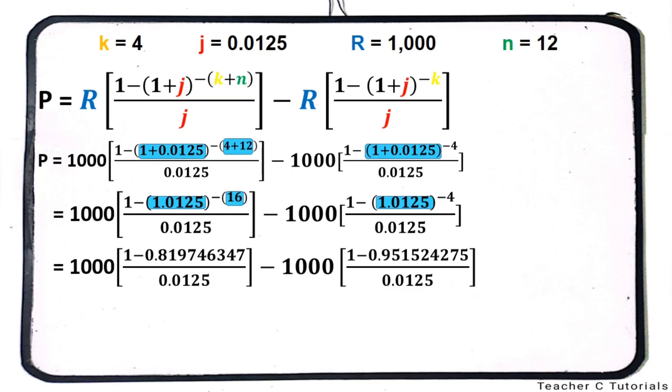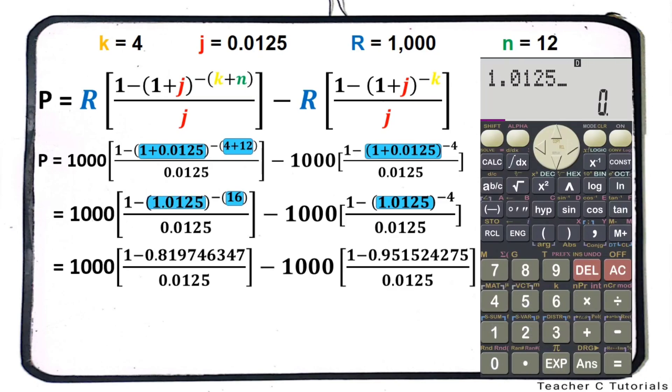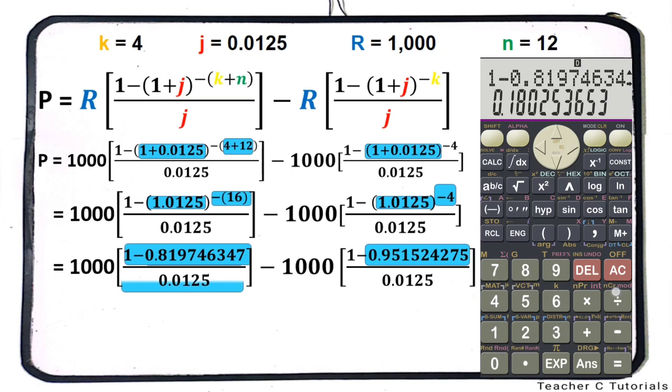Next, solve using your calculator. 1.0125 raised to the power of negative 16 is 0.819746347. 1.0125 raised to the power of negative 4 is 0.951524275.